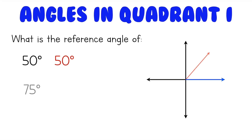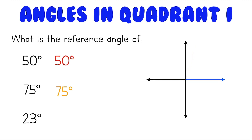What about the reference angle of 75 degrees? A 75 degree angle looks like this, and that angle right here is just 75 degrees. And what about the reference angle of 23 degrees? A 23 degree angle looks like this, and the angle right here is also just 23 degrees. So if you have an angle in the first quadrant, the reference angle is just the same thing as that angle.